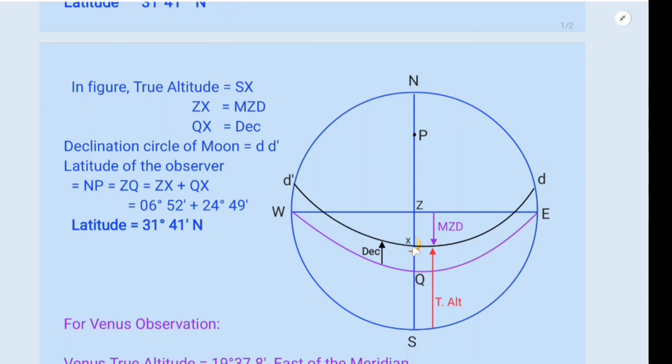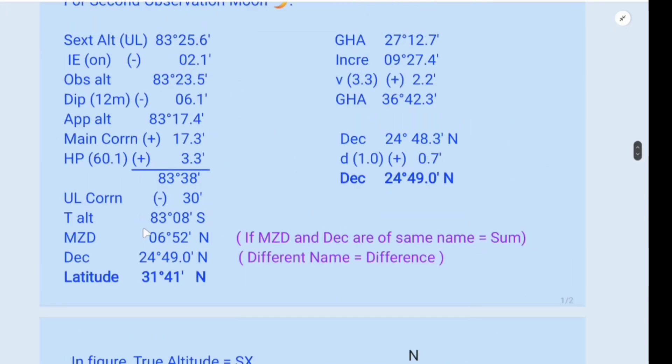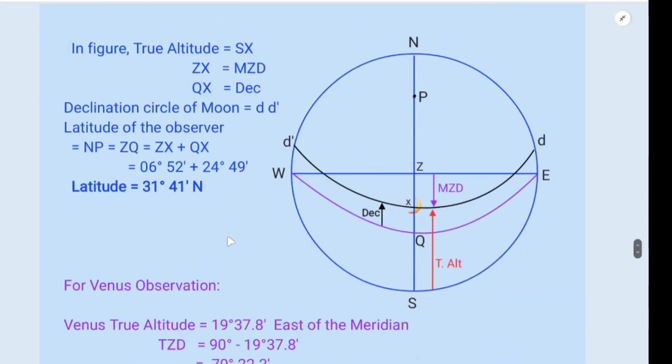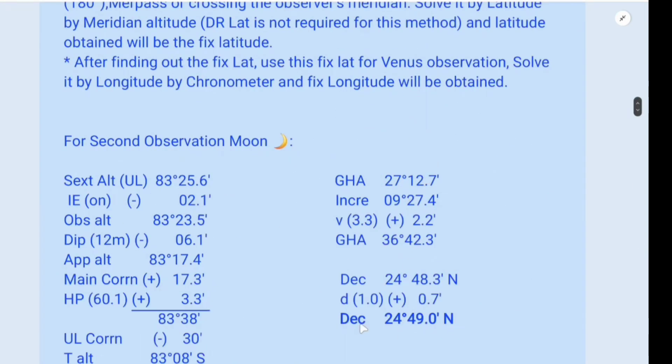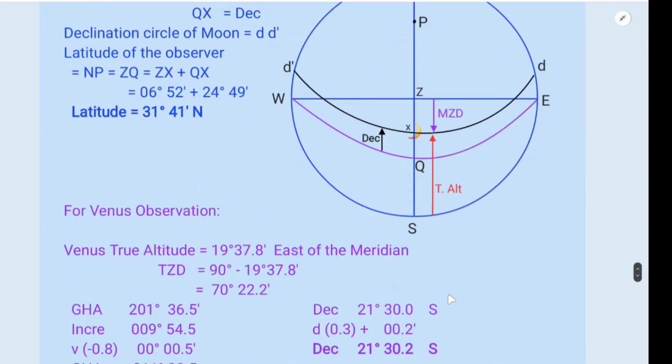ZQ is also equal to ZX plus QX. ZX, that is meridian zenith distance, we have calculated here as 06 degrees 52 minutes. And the declination we have calculated here, 24 degrees 49.0 minutes north. So Z to Q, if you add together, you get the latitude as 31 degrees 41 minutes north. Now we got the latitude.